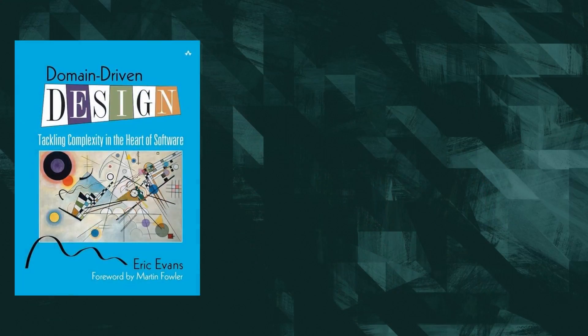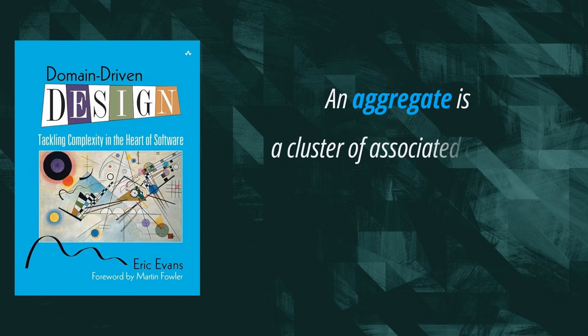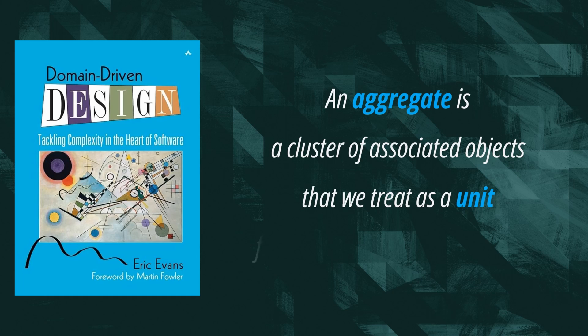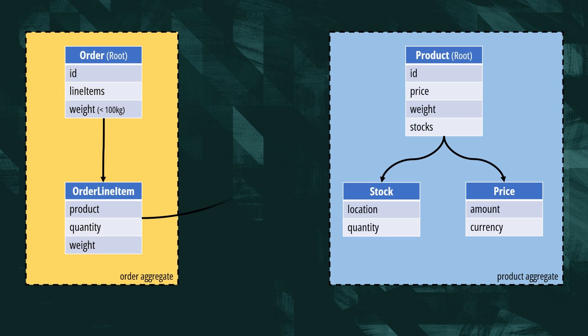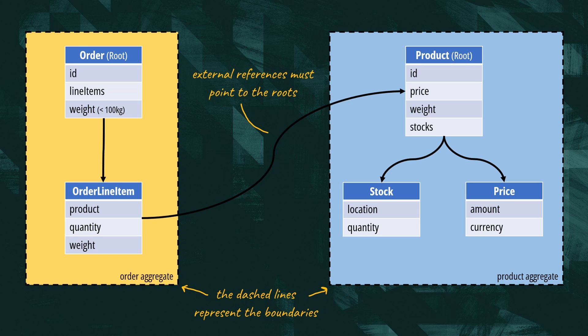In fact, as per Evans' definition, an aggregate is a cluster of associated objects that we treat as a unit for the purpose of data changes. Aggregates encapsulate data and enforce business rules to ensure its integrity. Each aggregate has a boundary that identifies its members and the root of an aggregate, which is the only member that outside objects are allowed to hold references to. In our scenario, the order class serves as the root of an aggregate containing line items.